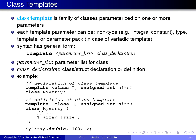A class template is a family of classes parameterized on one or more parameters. Like other templates in the language, each template parameter can be either a non-type — such as an integral constant like int or unsigned int — or a type, which can be a built-in type or a class type, or a template, or a parameter pack in the case of variadic templates. The general syntax for a class template is introduced by the template keyword, followed by the parameter list in angle brackets, and then the class declaration or definition.